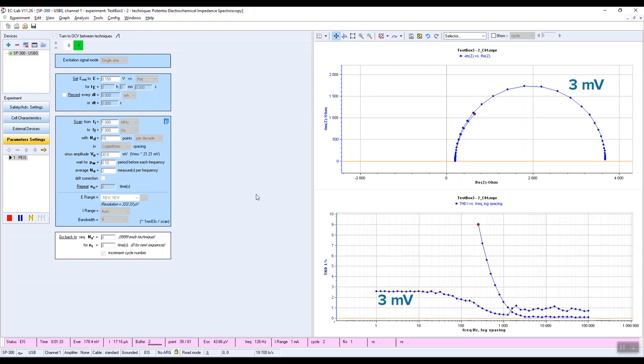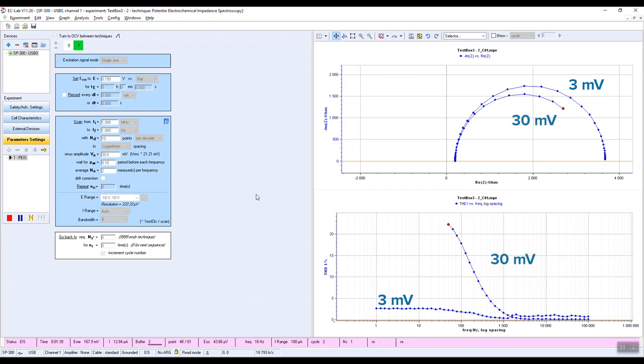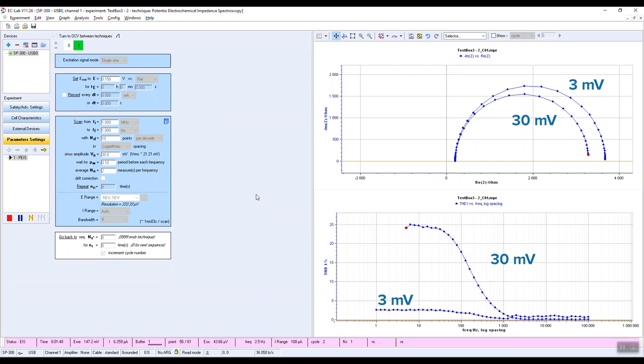As expected, for a nonlinear circuit, we get different impedance results at different amplitudes. We can also observe a strong THD increase indicating a non-linearity issue in the low frequency range.